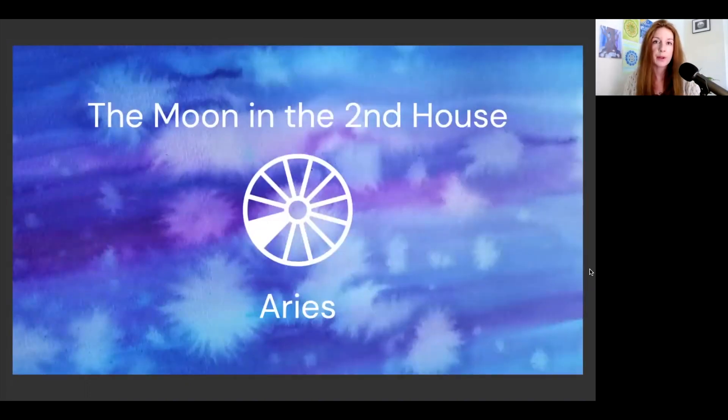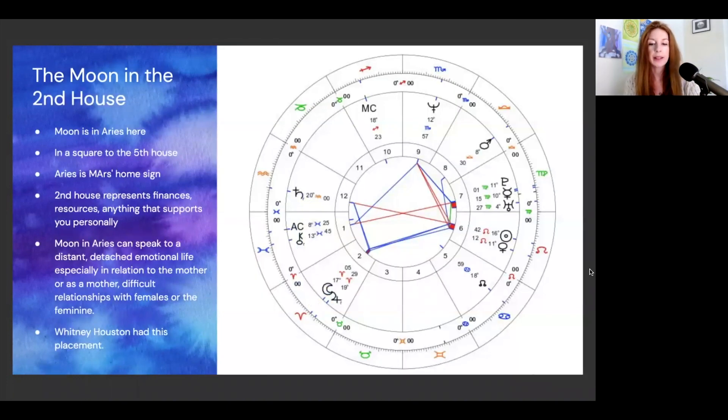Now we're going to move on to the moon in the second house, which will be in Aries. The moon in Aries is actually in a square to the fifth house placements, which is a more challenging aspect. While the moon can see what's happening in Cancer, there might be some challenges between the second and the fifth house. Aries is Mars's home sign, the lesser malefic. Mars can also represent difficulties, strife, war, things like that. The second house represents finances, resources, anything that supports you personally.